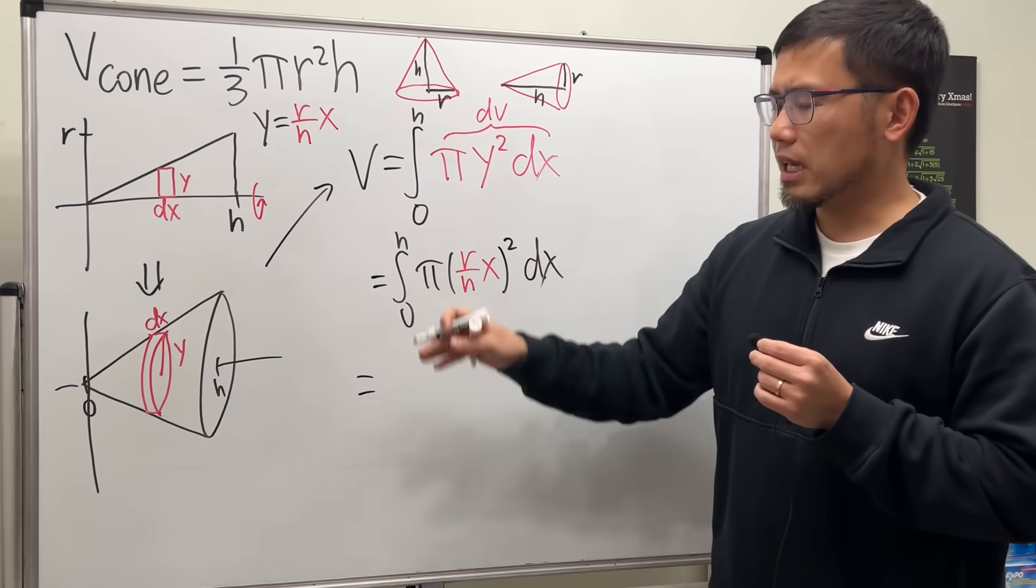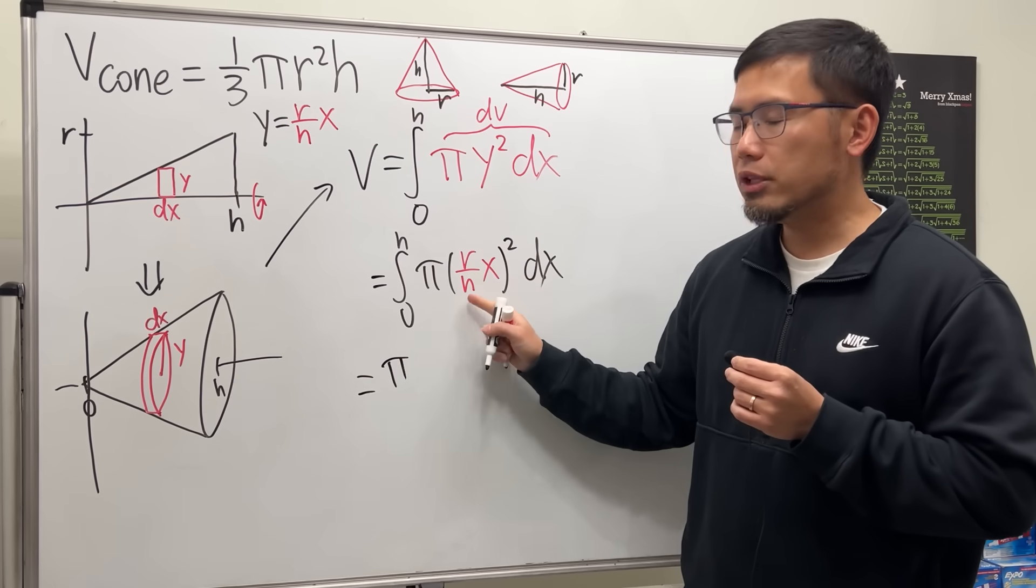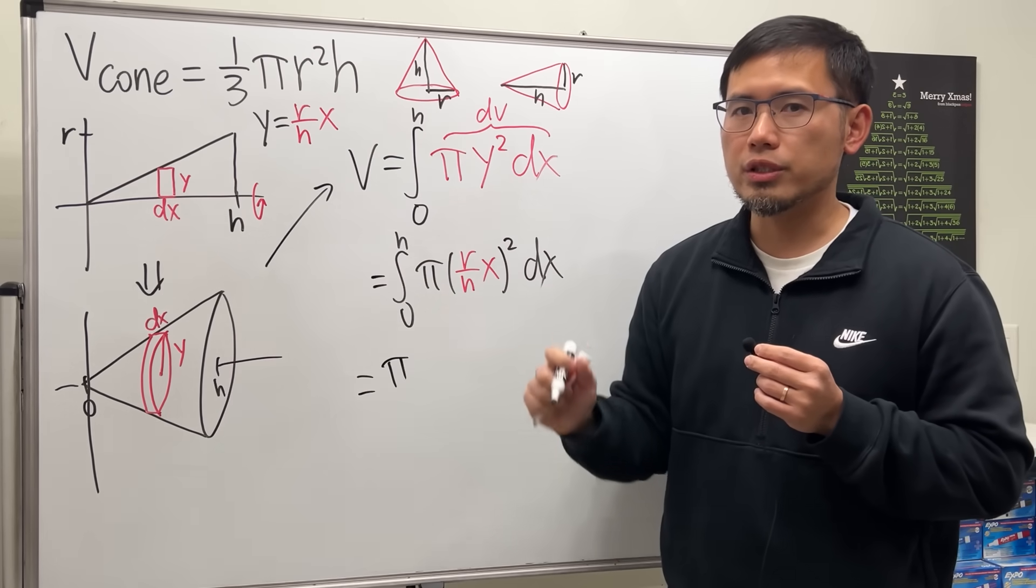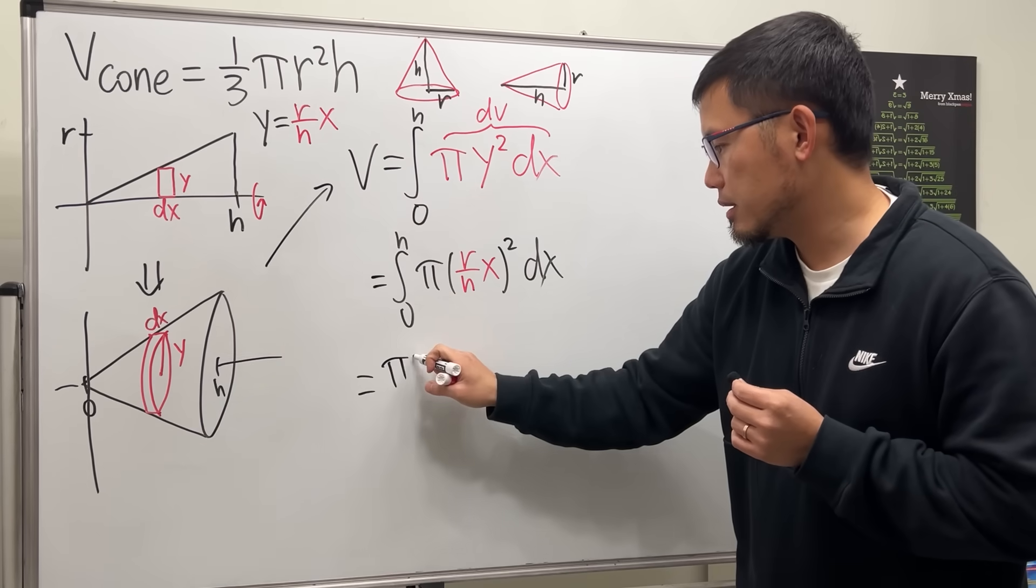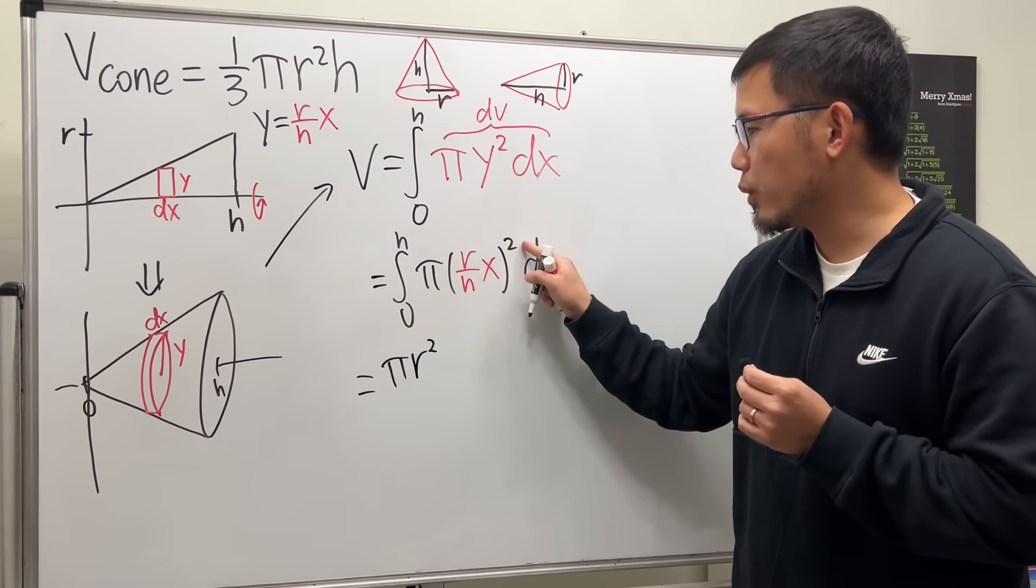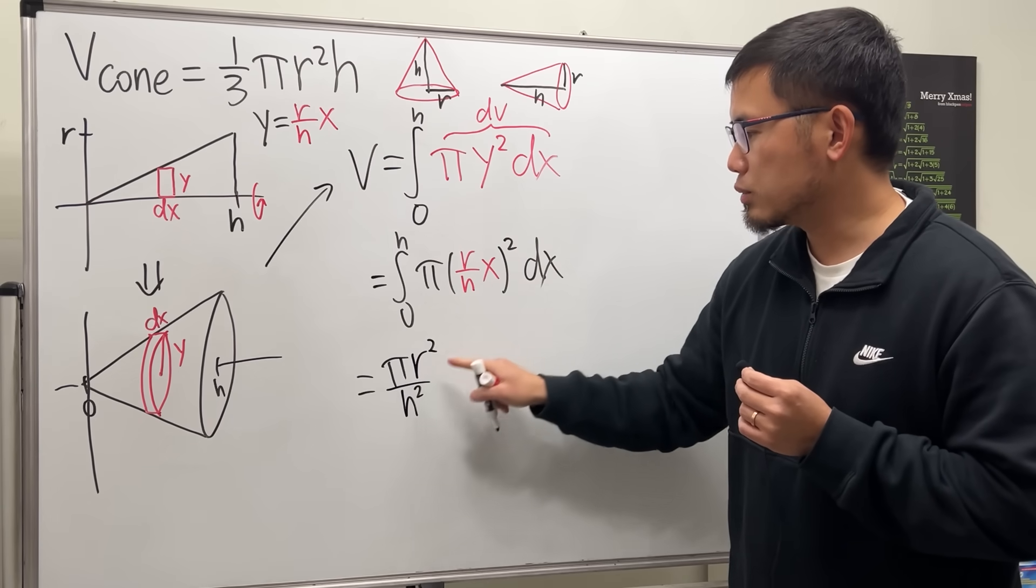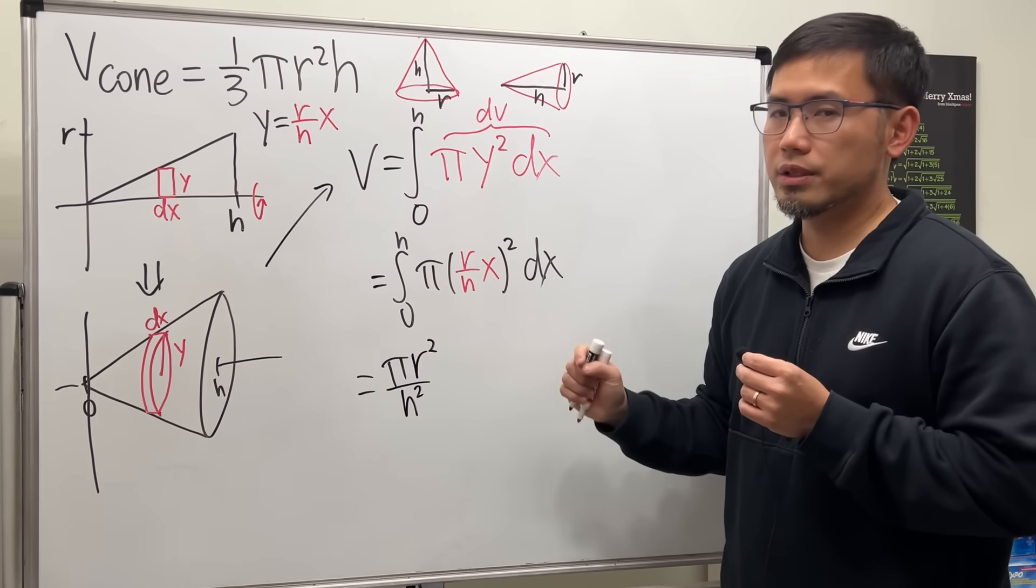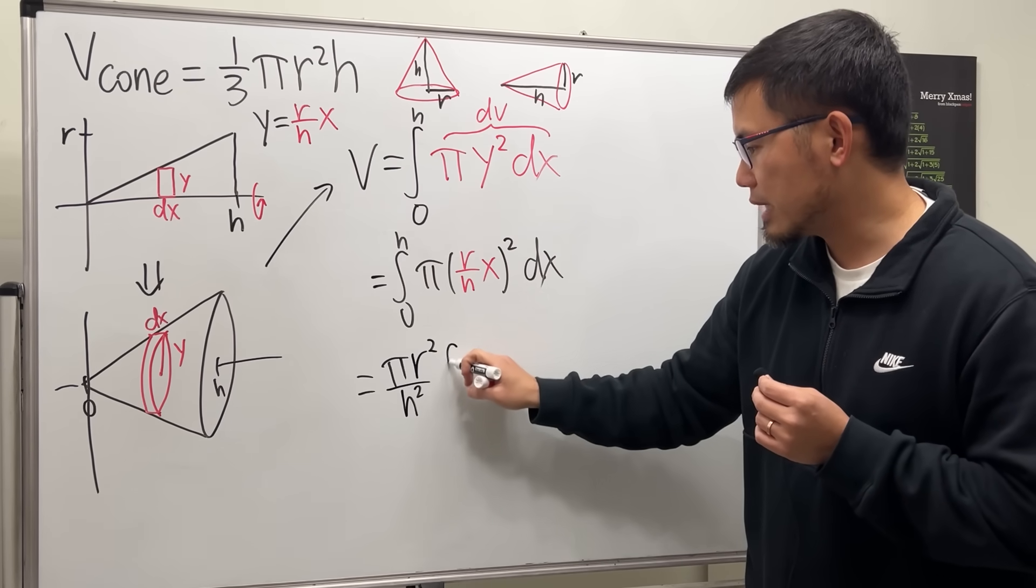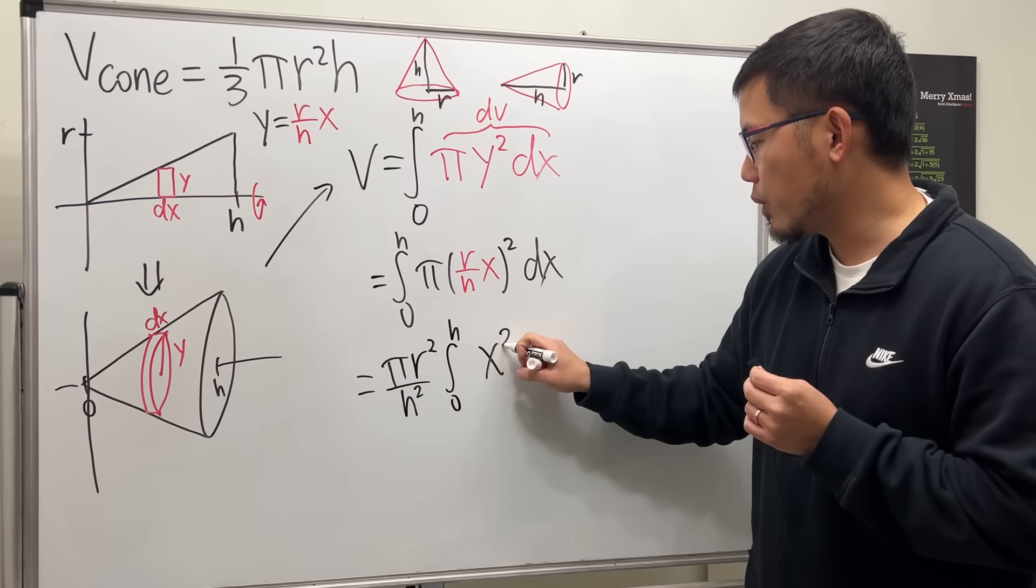Let's put all the constants on the outside. First, we have the pi. Secondly, r and h are the constants in this situation as well. r squared can be gone on the outside. Likewise, h squared can also be going on the outside. So that's what we have all together. These three things outside and the squares. And now for the inside, we just have the integral going from 0 to h. And we are looking at x squared dx.